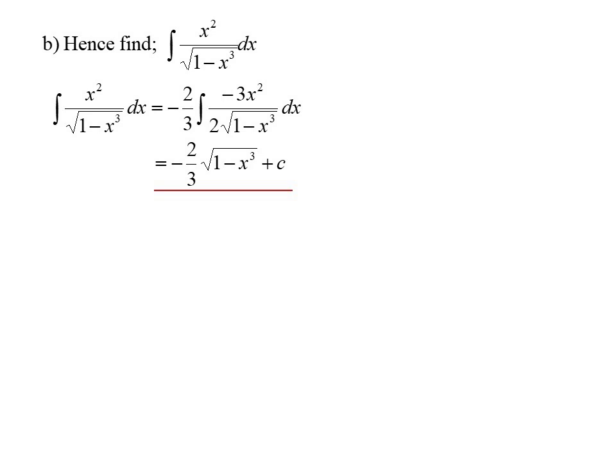So sometimes they'll do that in the question for you. They'll give you a massive hint. But if they don't, all we've got to do is we want to set up a situation where we have a derivative times function. Because have a look at this integral. On the top of the fraction is x squared. The square root of 1 minus x cubed. Well the derivative of that is minus 3x squared. So that's what we tried to create on the top.